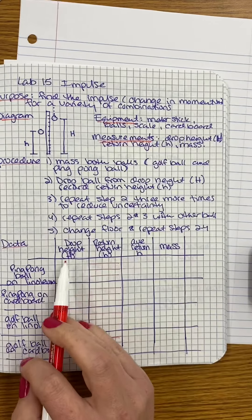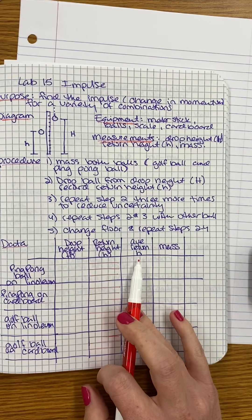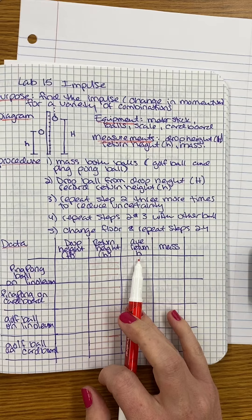So we're using our drop height, H, and then our average return height, little h, in our calculations.